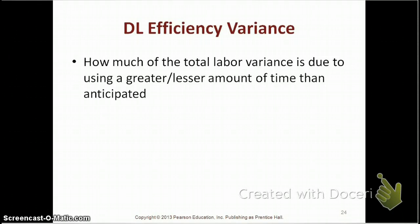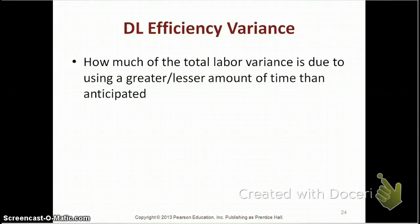The direct labor efficiency variance measures how much of the total direct labor variance is due to using a greater or lesser amount of time than anticipated. For example, going back to our coffee cup, if the person preparing the coffee spilled some coffee beans on the floor and as a result it took him longer to make the cup of coffee, we took more time than anticipated. That would be shown in the direct labor efficiency variance as an unfavorable efficiency variance.